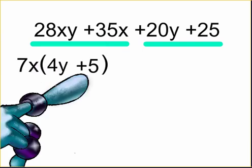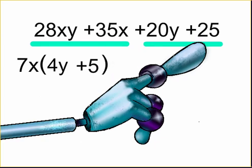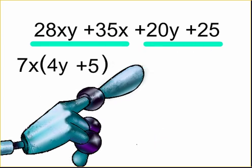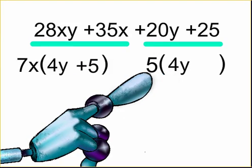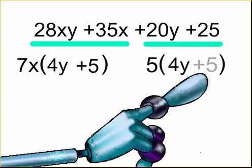In the remaining group of terms, 20y and positive 25, we can factor out a 5. 5 goes into 20y 4y times. 5 goes into 25 5 times.